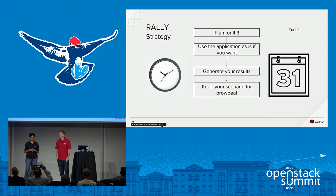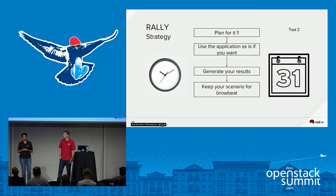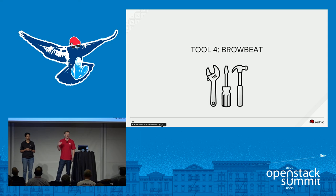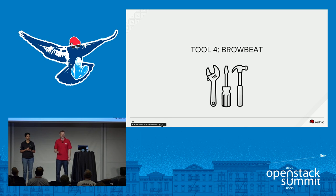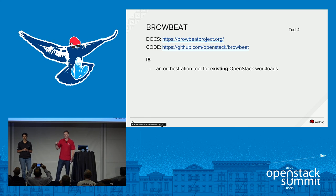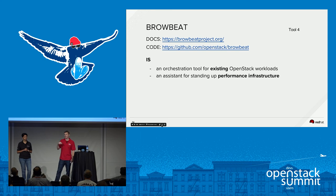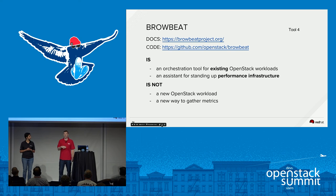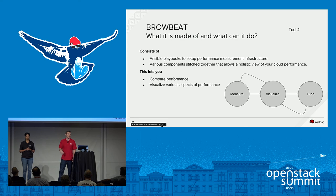Plan for it, use the application as-is if you want, generate your results, and don't forget to keep the same scenario for the next stage. Now we have validations, functional testing, and basic benchmarking. The next logical step is to aggregate that data over time and tune and optimize the cloud — that's where BrowBeat comes in. BrowBeat is an orchestration tool for existing OpenStack workloads like Rally. We can use BrowBeat to run Rally and then aggregate results over time. It is an assistant for standing up a performance infrastructure for tuning — it is not a new OpenStack workload. Nothing is being reinvented; it utilizes existing metrics and your Rally use cases.